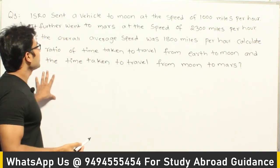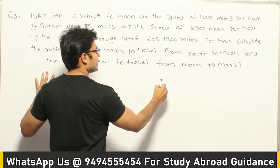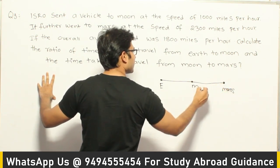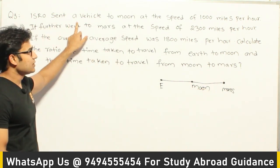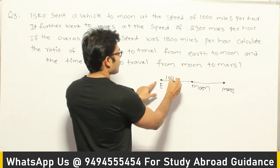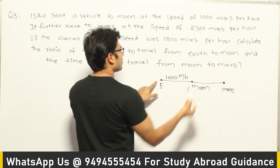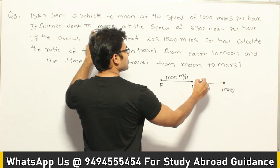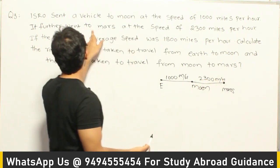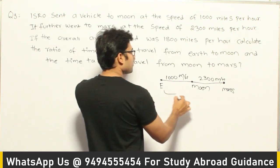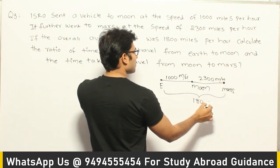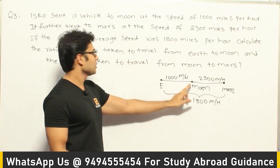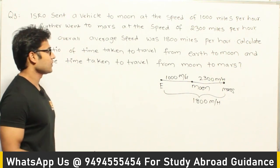We are sending a vehicle from Earth to Moon first, and then from Moon to Mars. The speed from Earth to Moon is 1000 miles per hour, and the speed from Moon to Mars is 2300 miles per hour. The overall average speed for the entire trip is 1800 miles per hour. Now we need to calculate the ratio of time taken to travel from Earth to Moon and the time taken from Moon to Mars.